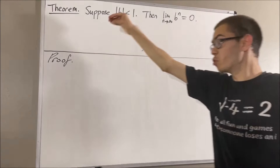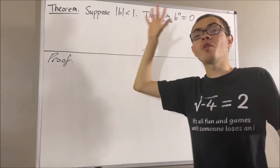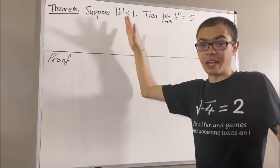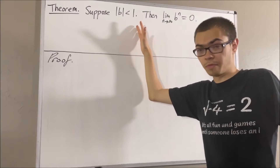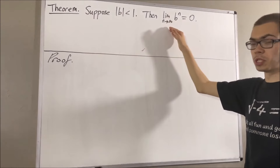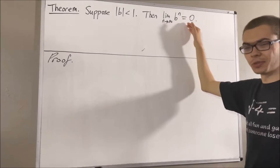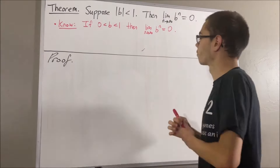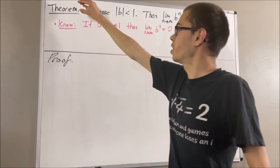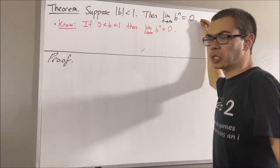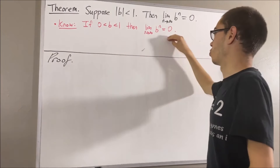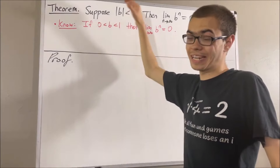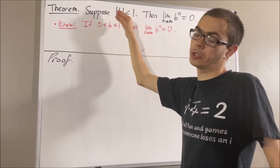Now, in proving this theorem, we have already proven that if b is a real number such that 0 is less than b is less than 1, then the limit as n approaches infinity of b to the power of n is equal to 0. This theorem is essentially extending that proposition so that b has the ability to be between negative 1 and 0, or also equal to 0.